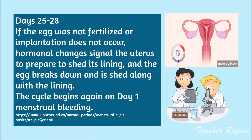Days 25 to 28: if the egg was not fertilized or implantation does not occur, hormonal changes signal the uterus to prepare to shed its lining, and the egg breaks down and is shed along with the lining. The cycle begins again on day 1 with menstrual bleeding.